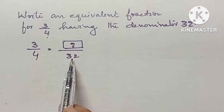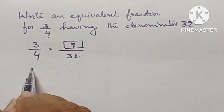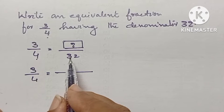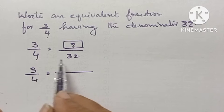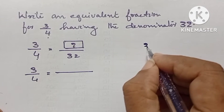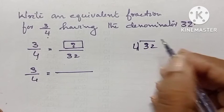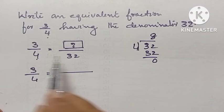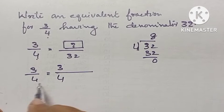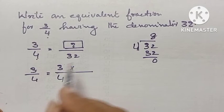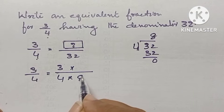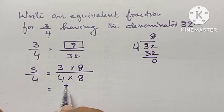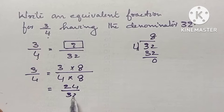The denominator is 4 here, and the denominator is 32 there. We need 32 divided by 4, which gives 8. Therefore, 4 into 8 equals 32. We write the same fraction 3 by 4, multiplying numerator and denominator by the same number 8, giving us 24 divided by 32.